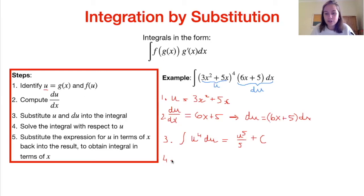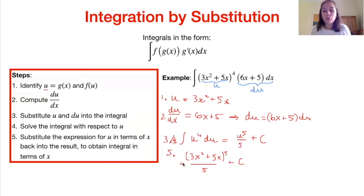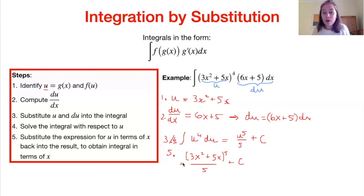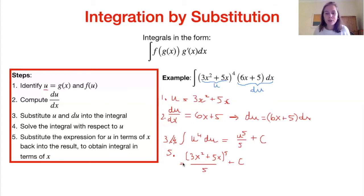Step 5 is to substitute our expression for u back in terms of x. So substituting in, this is equal to (3x² + 5x)⁵ over 5 plus c — that's our final answer. We identified a function and its derivative, computed the derivative, substituted u and du to get an easier integral, solved it using the formula booklet, and finally substituted our expression for u back into the solution.